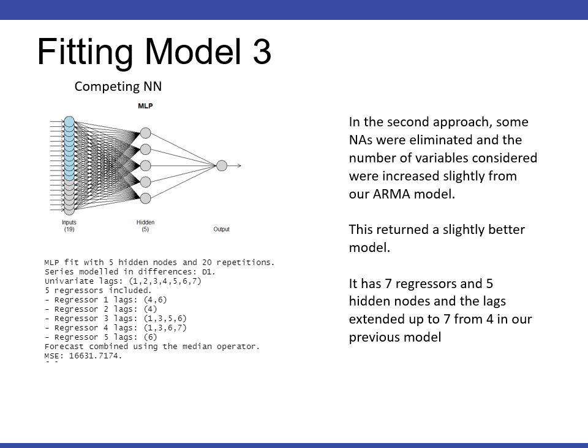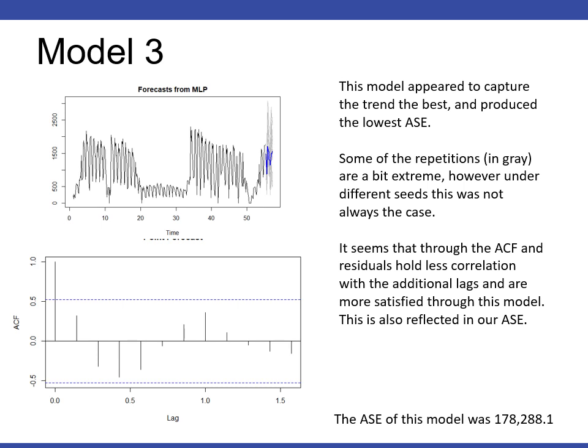For our third model, we decided to use weather data in correlation with the ID swipe data. And after adding temperature, relative humidity, and days of the week and dew point, we ended up getting a much more accurate model. This model appeared to capture the trend at the best and produce the lowest ASE.